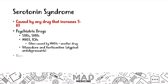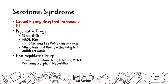When it comes to non-psychiatric drugs used in psychiatric treatment, you have tramadol, ondansetron, triptans, MDMA or ecstasy, dextromethorphan, and meperidine, along with a natural substance called St. John's Wort. I highly recommend you remember this — St. John's Wort is an herbal supplement that can lead to increased levels of serotonin, so make sure you remember it.